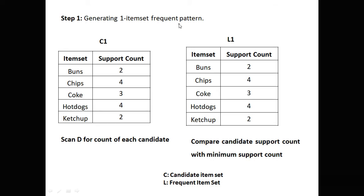Step 1: Generating one-itemset frequent pattern. We generate C1 and from C1 we generate L1. For C1, we take the items present in our transactions, and it's better to take items in ascending order: buns, chips, coke, hot dogs, and ketchup, with their respective support counts. L1 is the filtered version of C1 because L always represents the frequent itemset. The minimum support count is 2, so L1 contains all entries with support count greater than or equal to 2. All items qualify, so C1 and L1 are similar.